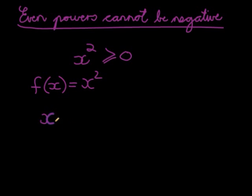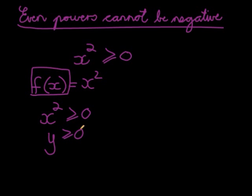then I see, okay, well, I know that x squared and even power cannot be negative. So, x squared will be positive or equal to zero, which means that y, that's the value, this can just be replaced with y, y will be bigger or equal to zero. My output will be bigger or equal to zero.